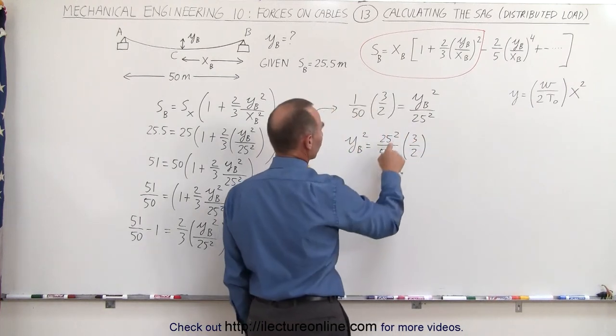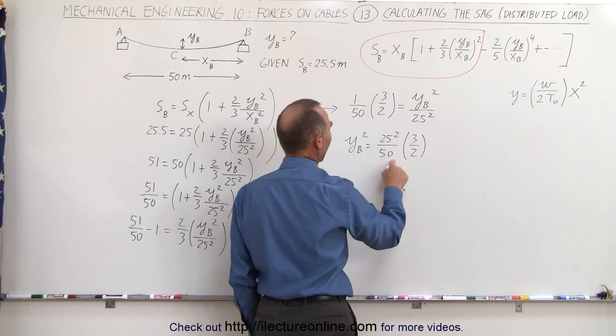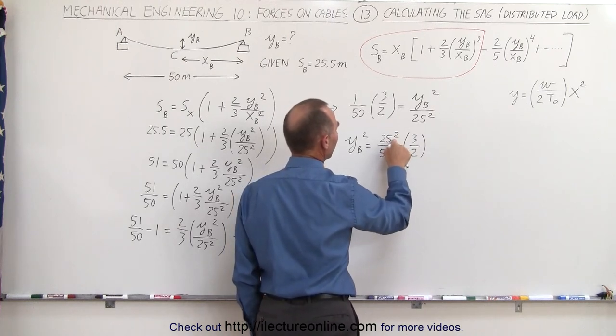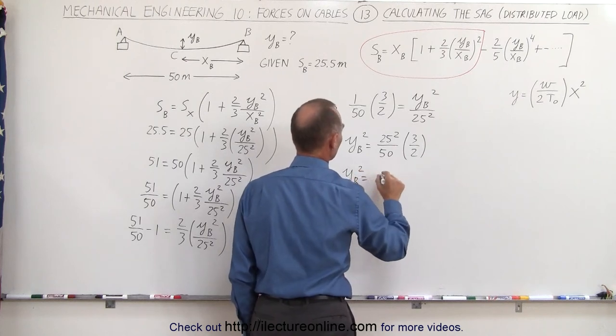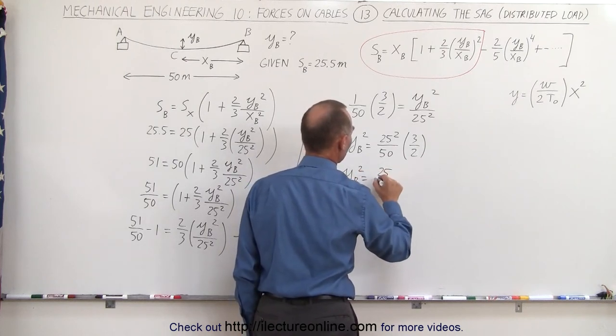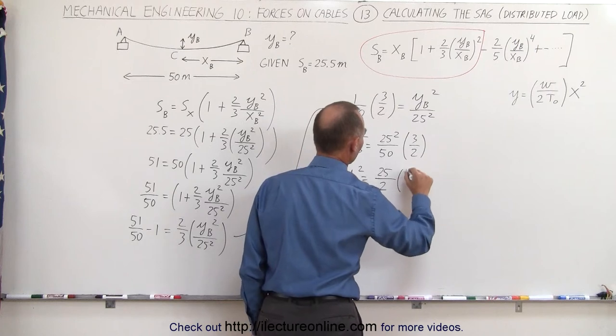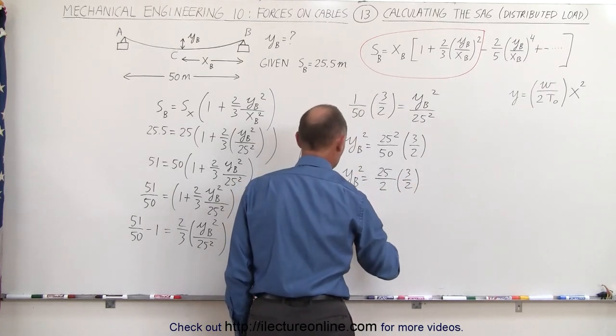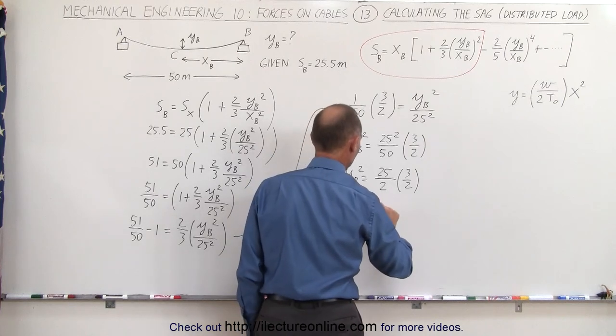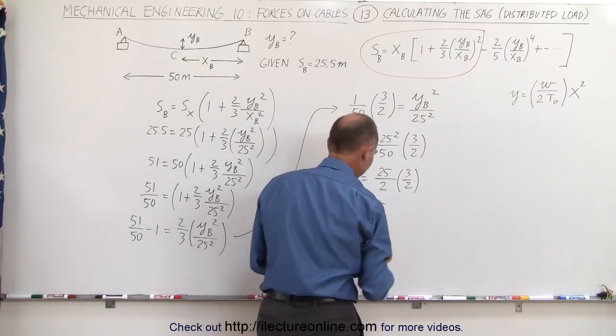And so 25 divided by 50 is one-half. It's 25 squared, so we have 25 divided by two. Y sub B squared is equal to 25 divided by two times three over two. And so this is Y sub B squared is equal to 75 divided by four.